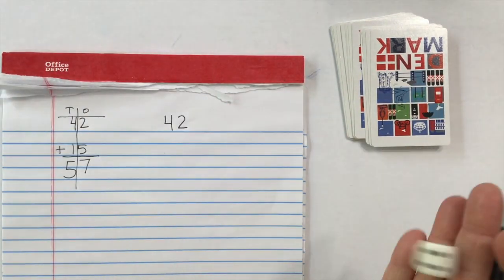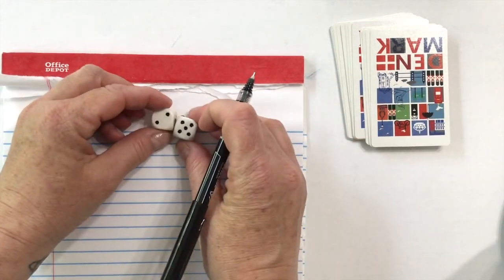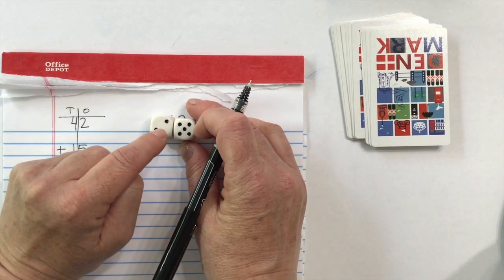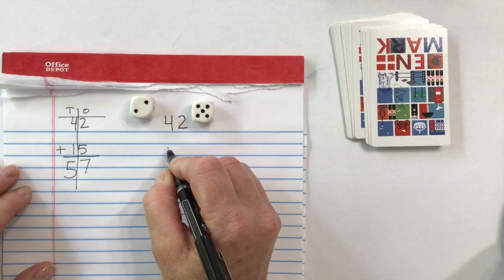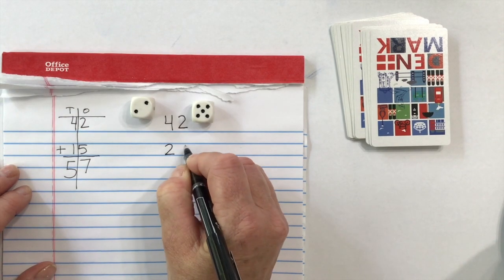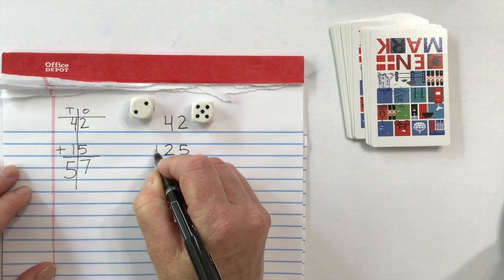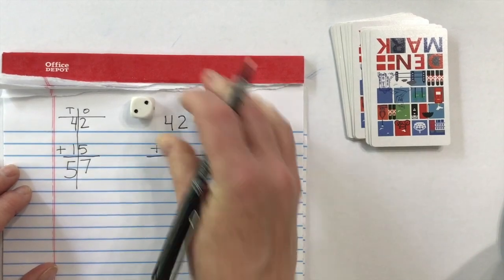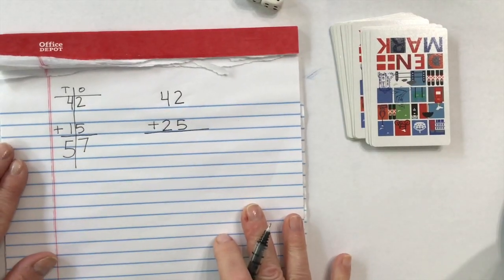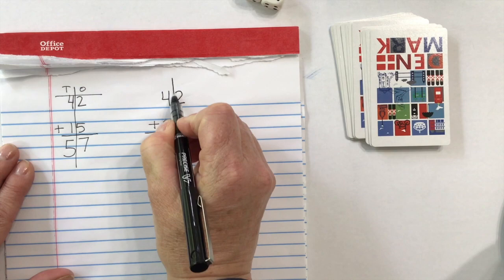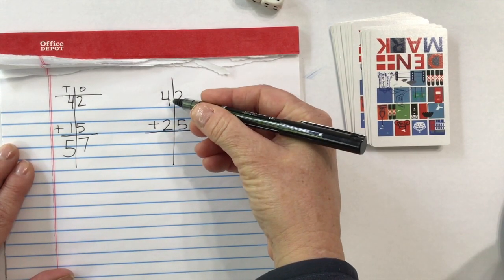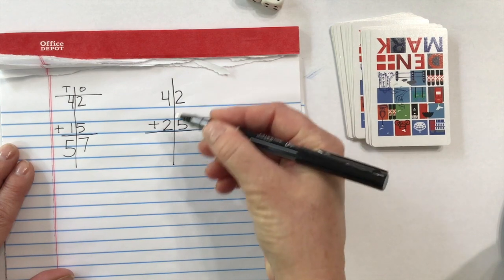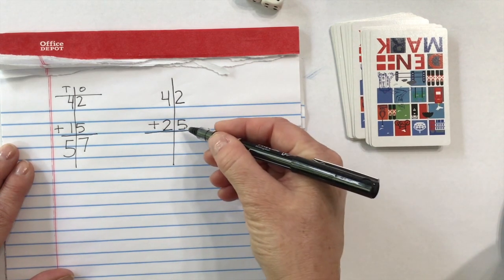Roll again. And I got 25. 42 plus 25. Put your plus sign. Draw your equals line. And we're going to add tens and ones. 42 is four sets of 10 and 2. 25 is two sets of 10 and 5.